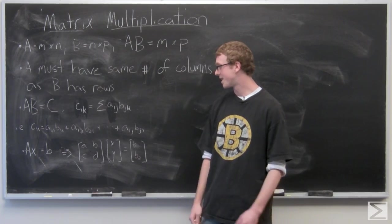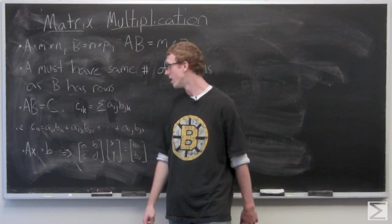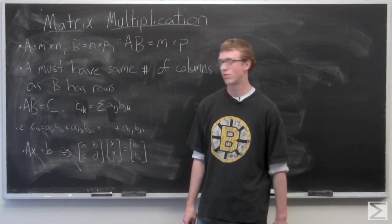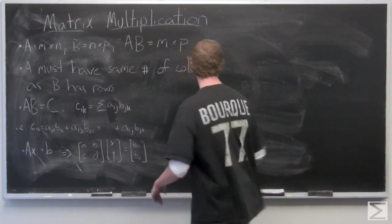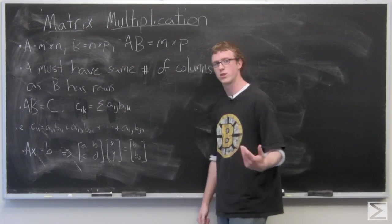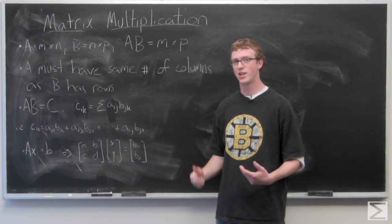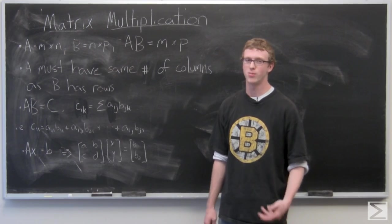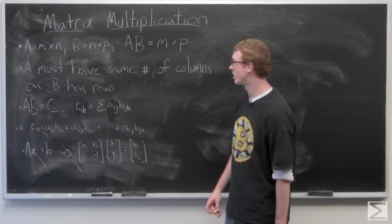And now we're just going to take a look at some examples so you guys can see how matrix multiplication really does work with numbers. So first we're going to start off with two 2x2 matrices. The resultant is going to be a 2x2 matrix.